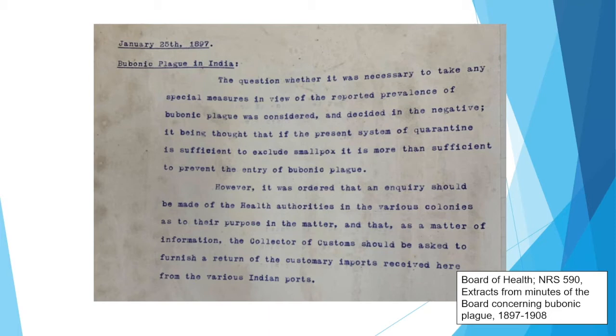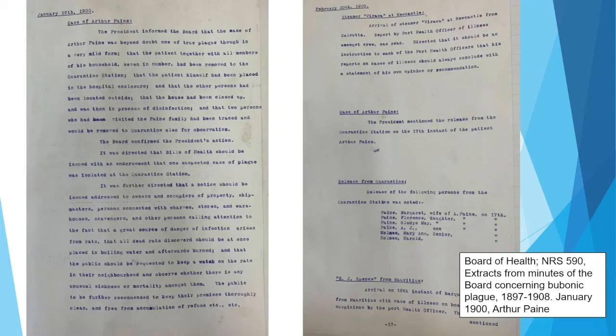By early January 1900, there were reports of plague in South Australia. It wasn't long after that the first case appeared in New South Wales in Sydney. On the 23rd of January 1900, Arthur Payne was reported to have symptoms of what could be plague, and this was confirmed two days later. Arthur's entire household of seven were relocated to the quarantine station and two contacts had also been sent there for observation. The Board directed that all people connected with wharves and storehouses should be informed that rats were a great danger of infection, and that the public should keep a watch for rats and any unusual sickness.